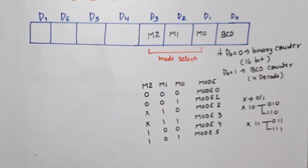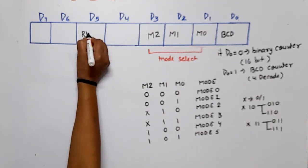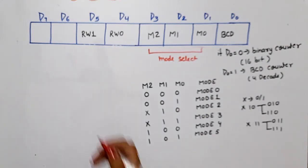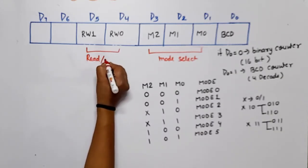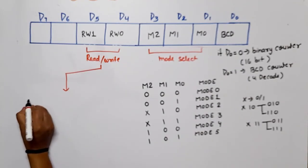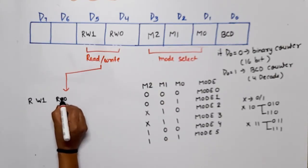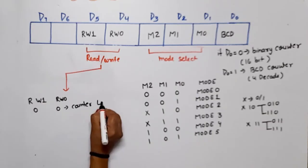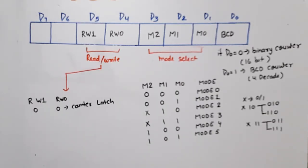The next bits are D5 and D4, which are RW1 and RW0. These decide the read/write operation. We will make a table for this. If RW1 and RW0 are both 0, then counter latch is selected. Counter latch means the microprocessor wants to read the current status of the counter. There are two operations: either it stops the counting, or it reads the current status without interrupting the count.